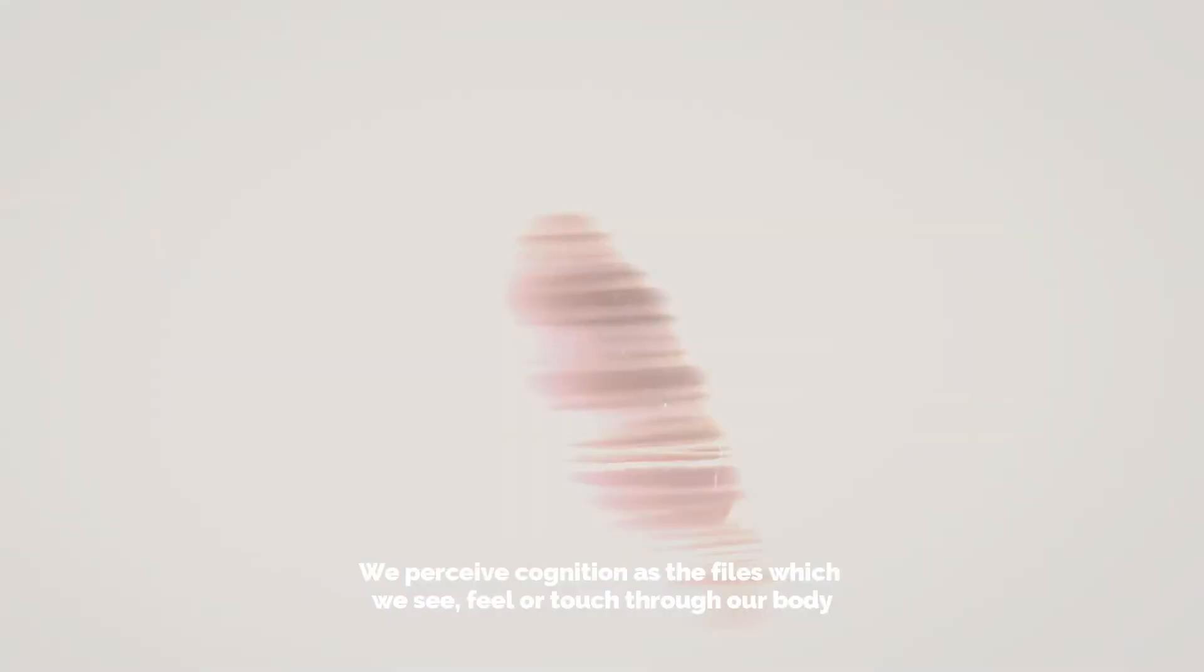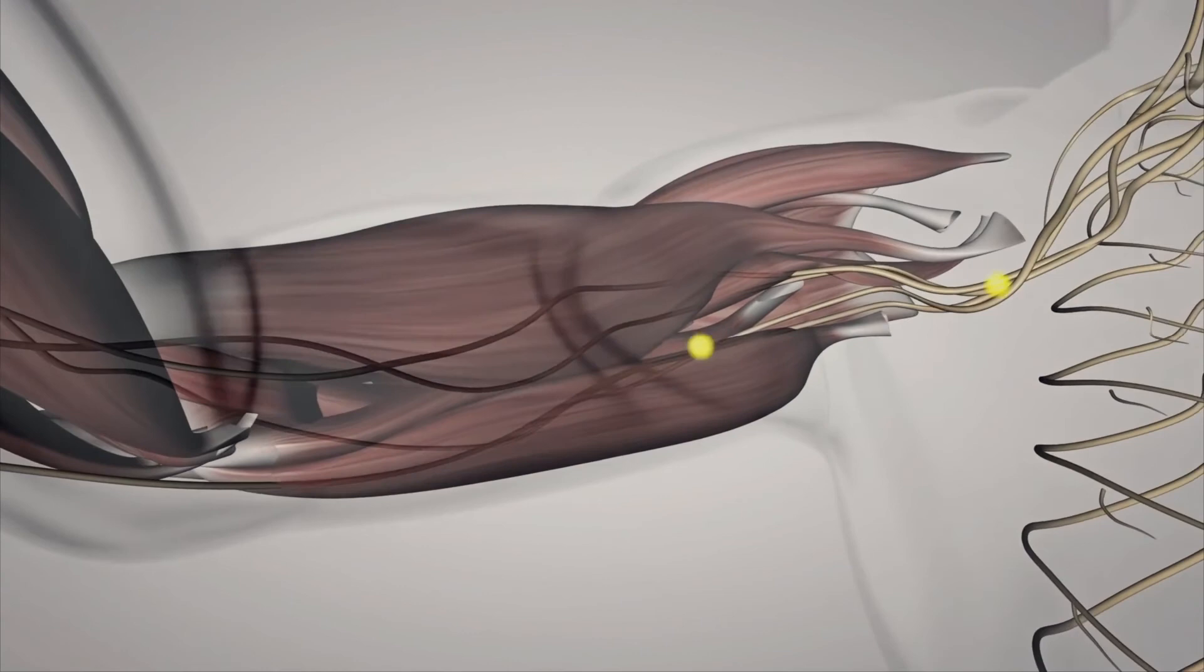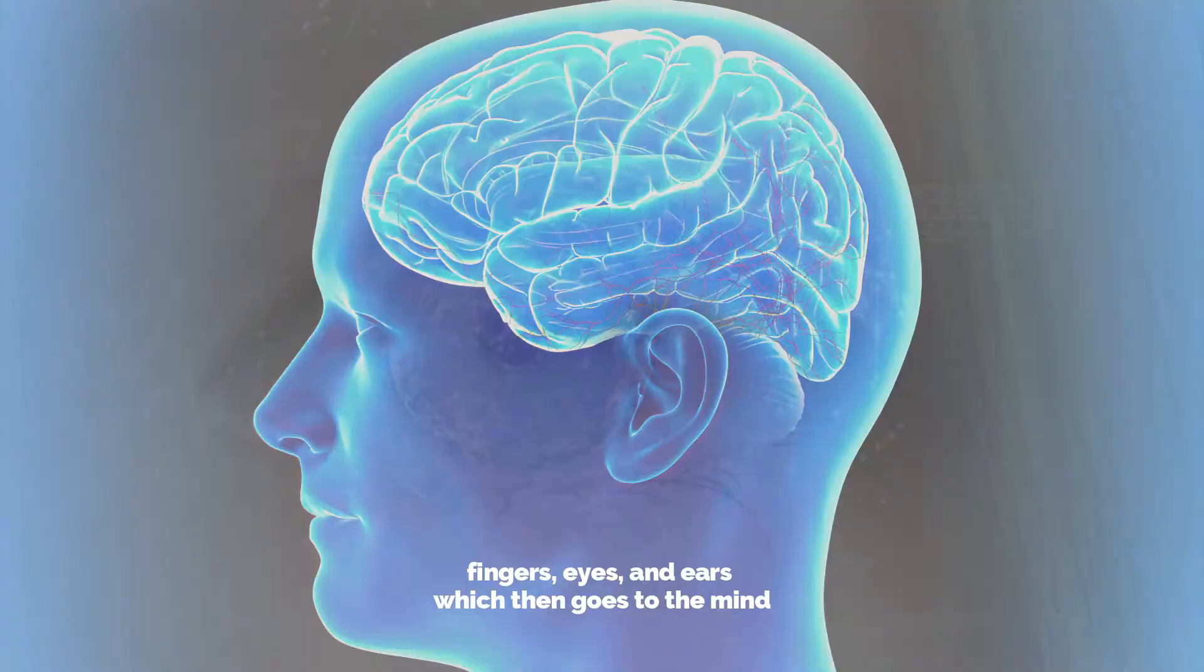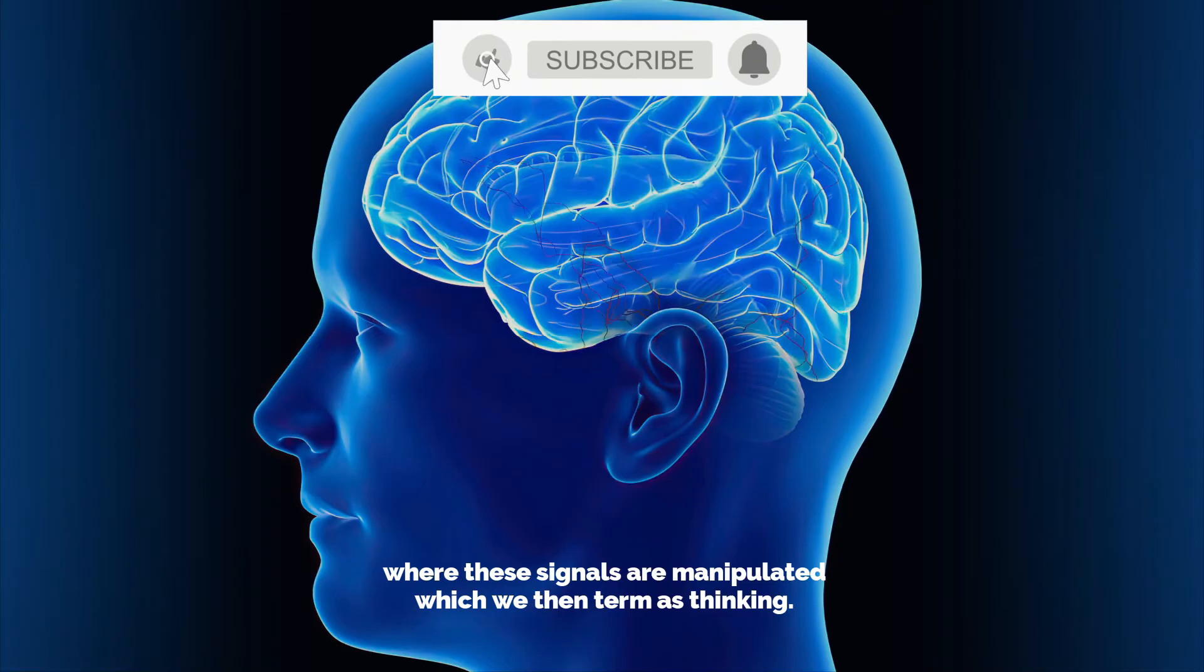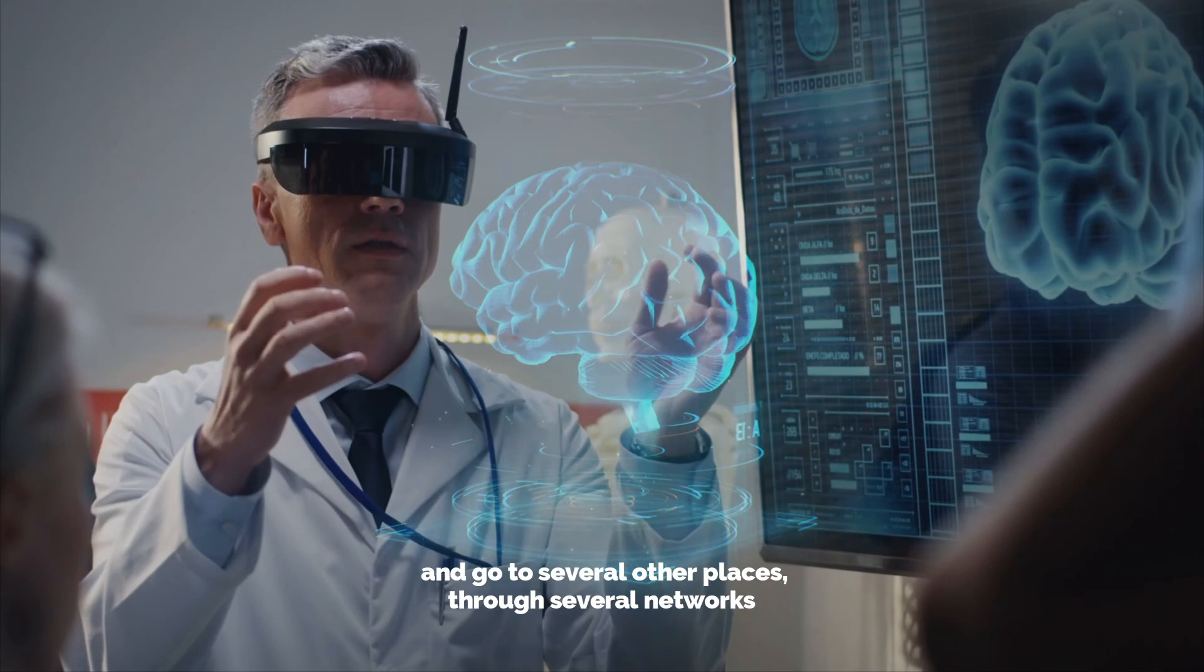We perceive cognition as the things which we see, feel, or touch through our body, which are then related to our brain. This sensory data is perceived through bones, fingers, eyes, and ears, which then goes to the mind where these signals are manipulated, which we then term as thinking.